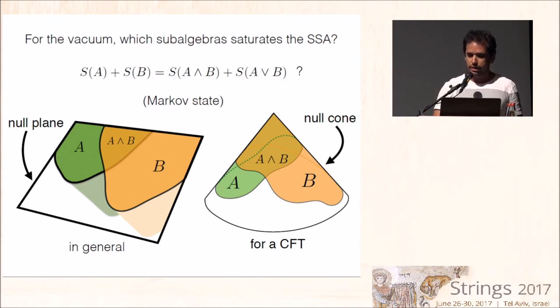So we have proved this, which we have called the Markov property of the vacuum, because the state that saturates the strong subadditivity inequality has this name. And we have proved this by three methods, one algebraic and general, and one of which gives us an explicit expression for the modular Hamiltonian of these regions whose null future horizon lies on a plane.